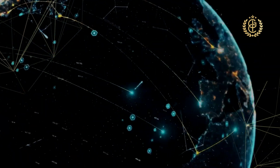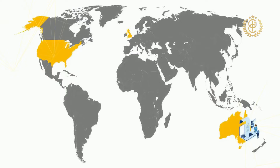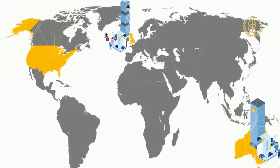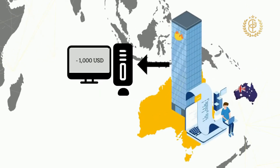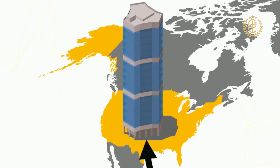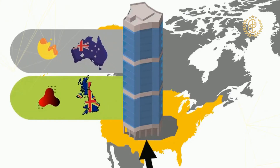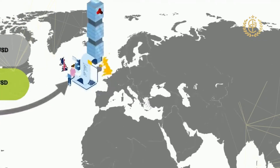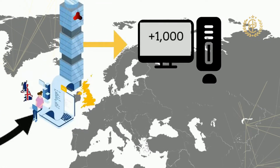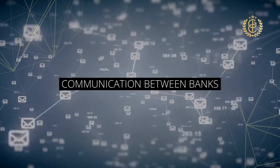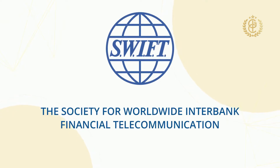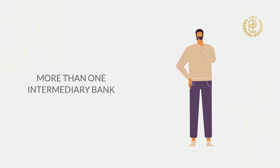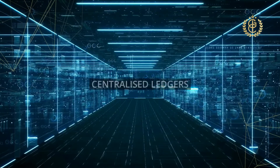If your transaction is going to a beneficiary who maintains their account at a different bank — a different ledger — the transaction might take much longer. For example, Ross, who lives in Sydney, wants to send a thousand US dollars to Emily in London. The bank in Sydney will debit Ross's account and inform an intermediary bank — for example, a bank in the US that maintains accounts for both banks — to do the electronic transfer. When the bank in London is notified, they will credit Emily's account. The communication between banks is usually done through SWIFT messages — the Society for Worldwide Interbank Financial Telecommunication.